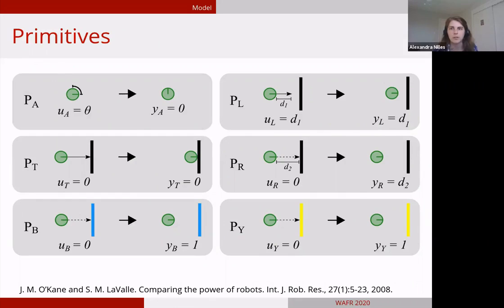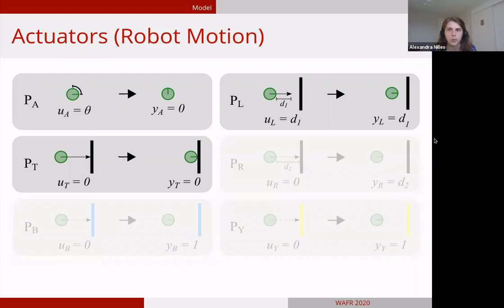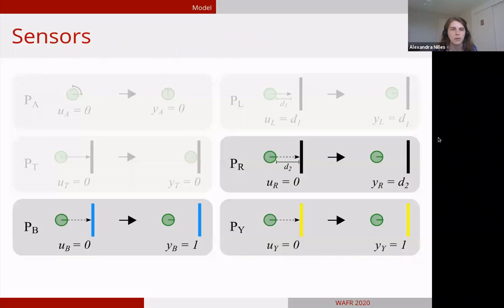We introduce a bunch of primitives. A primitive defines a mode of operation of a robot, either a sensor or an actuator or both. We use six primitives in this work. The top four are taken from this paper by Jason O'Kane and Stephen Laval on comparing the power of robots. The bottom two are our new definitions. So we'll go through the actuators, the first three primitives. Primitive A describes a rotation relative to a local reference frame. We give it an angle theta and the robot will rotate that amount. Primitive L corresponds to a forward translation over a specified distance. We give it a distance D and it can translate forward that amount. Primitive T carries out forward translation forever until it runs into an obstacle, with no specified distance.